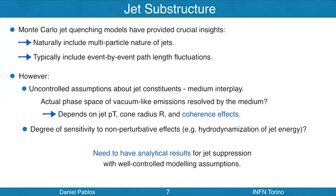Another important thing that Monte Carlo provides is that they typically include event-by-event path length fluctuations. Many analytical attempts have not only considered the jet as a single global charge, but also the medium has been typically overly simplified. Monte Carlo typically includes the event-by-event nature of jet quenching. However, there are uncontrolled assumptions about the interplay between the jet constituents and the medium. A very important question is which is the actual phase space of the vacuum-like emissions that can be resolved by the medium. This will depend on the jet pT, the cone radius R, and also coherence effects, which have been largely neglected in the literature, also in jet quenching Monte Carlo.